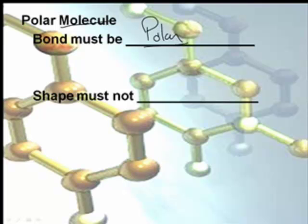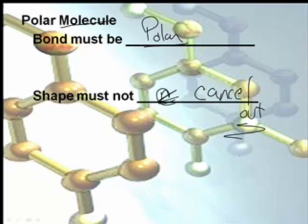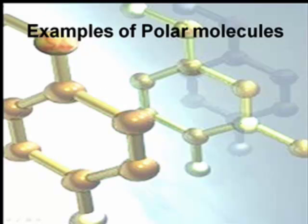The bond must be polar. If you have a nonpolar bond, you cannot have a polar molecule. But you also have the shape must not cancel out. And we're going to learn more about shapes in a subsequent podcast.